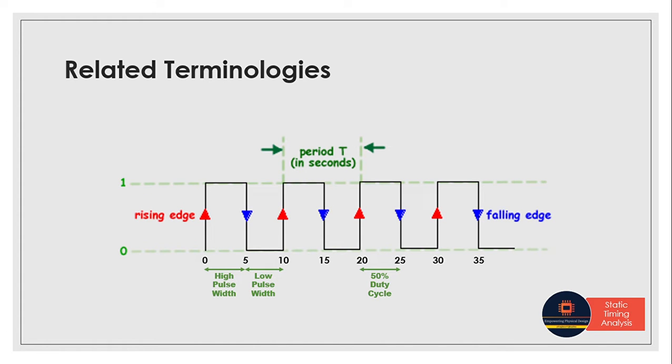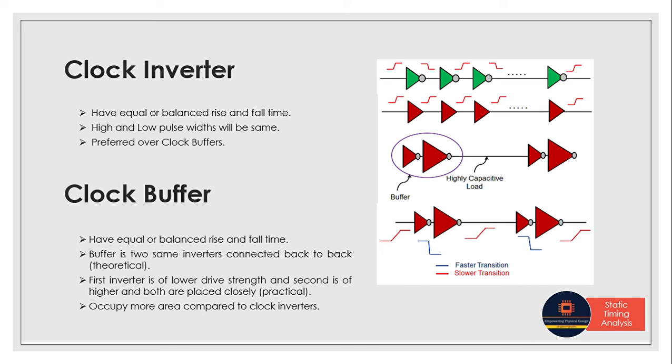In this video, we'll see how clock inverters differ from clock buffers. Clock inverters and clock buffers share a common feature: both have equal or balanced rise and fall time. This means whatever rise time we have, we get the exact same fall time, so pulse width violation doesn't happen.